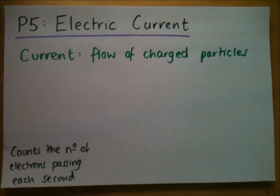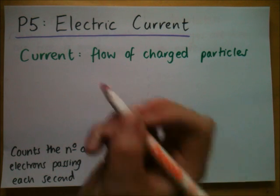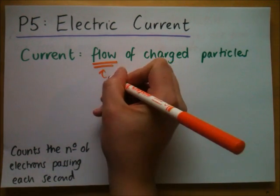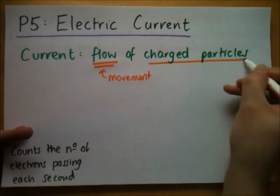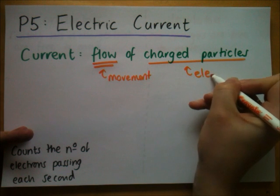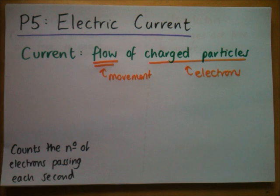Electric current is the bread and butter of electricity. When people say there's electricity flowing through that wire, they actually mean there's an electric current flowing through that wire — it's the proper word for what we usually call electricity. A current, or current electricity, is simply a flow — movement — of charged particles, and we know those charged particles are usually electrons. This is different to static electricity, which was still electrons but static. So current electricity is flowing, moving particles, while static electricity is still particles of charge.